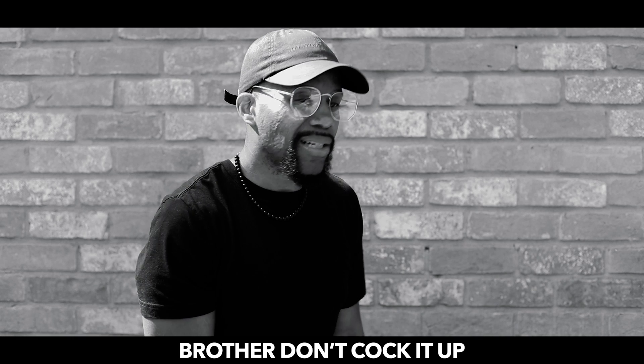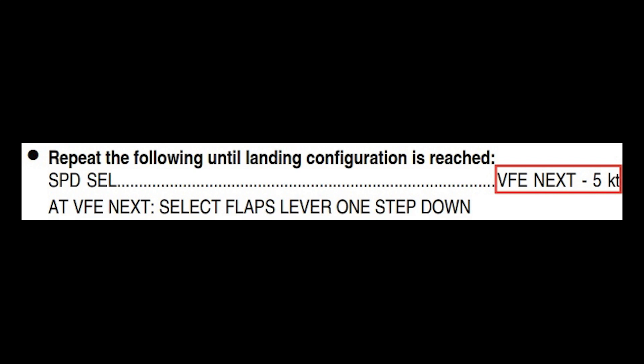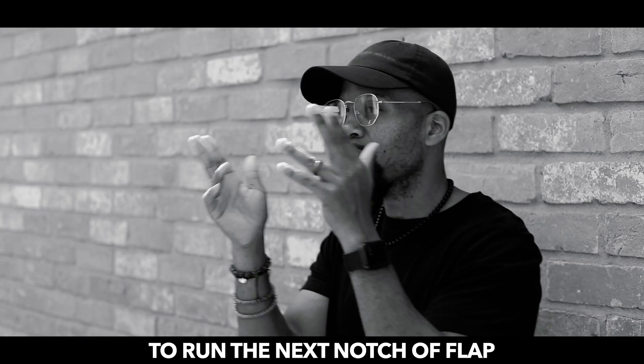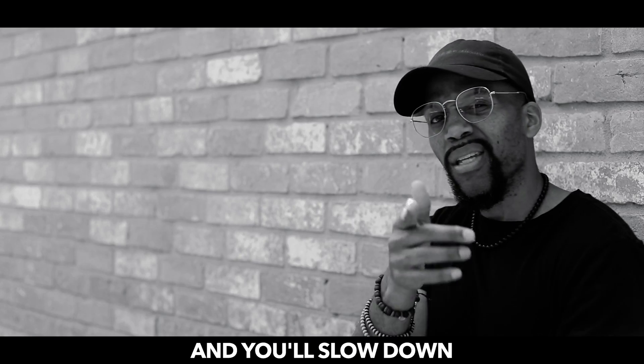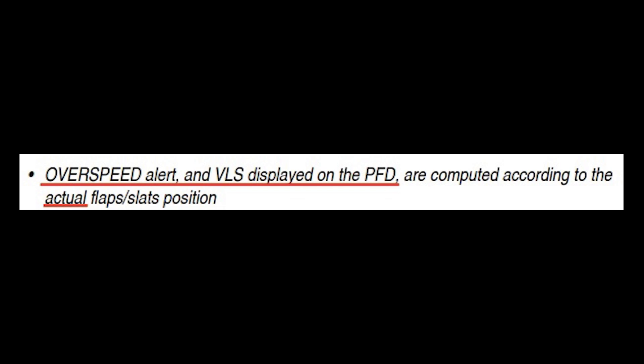Just set the speed to VFE next minus five, which is just fast enough to keep you alive but still slow enough to run the next notch and flap. And you'll slow down without any more crap. Now the overspeed alert and VLS that you see are real, the true brother, they're the OG.